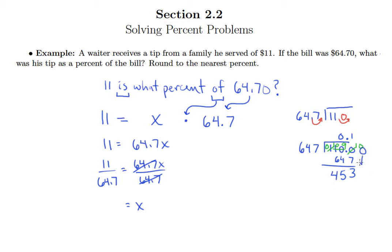We'll add a 0, drop it down. So 647 goes into 4,530 about 7 times. So I need to do a little guessing and checking there to get that right. But 7 times 4 is 28 plus 4 is 32. And then 42 plus 3 is 45. So we have just a remainder of 1 there. So it just barely fits.